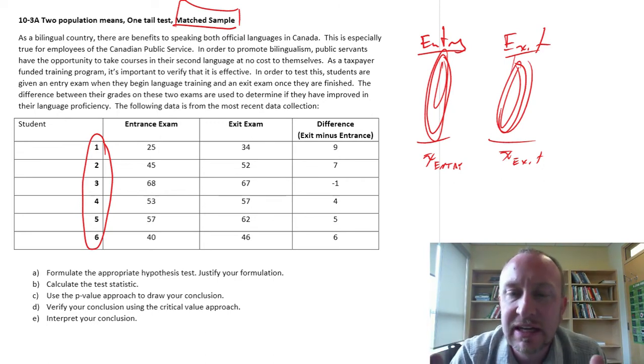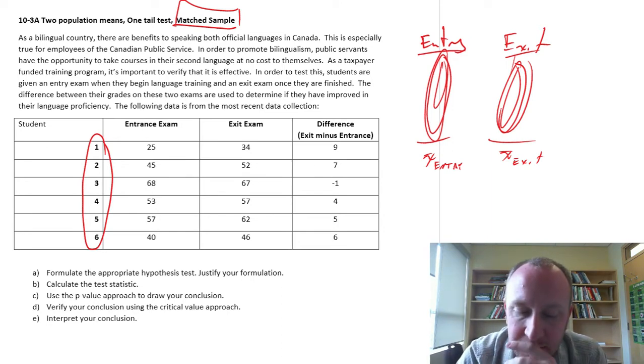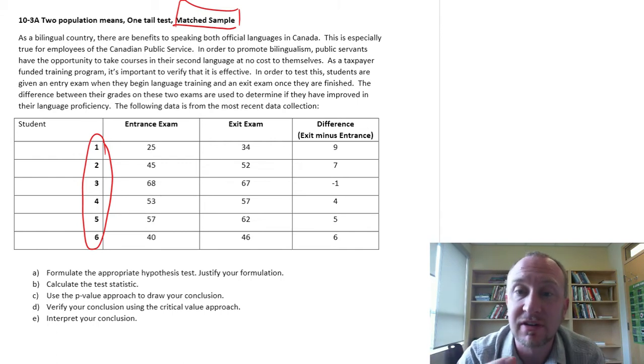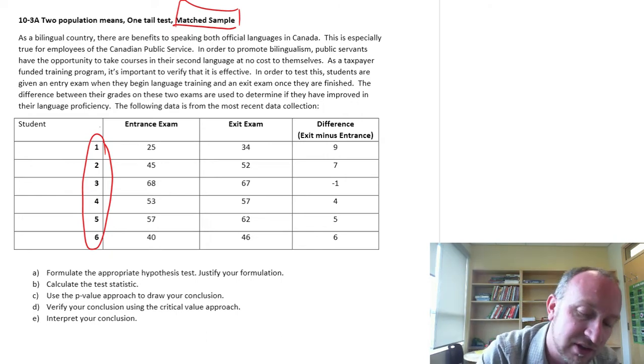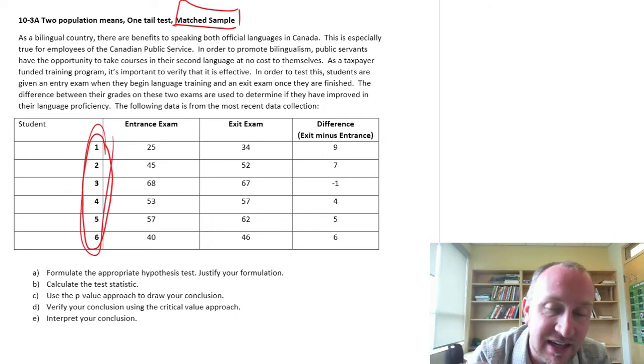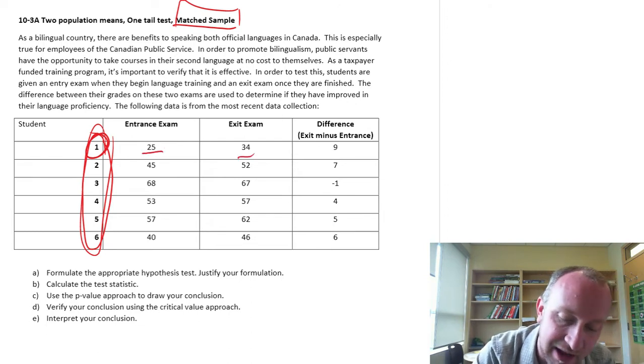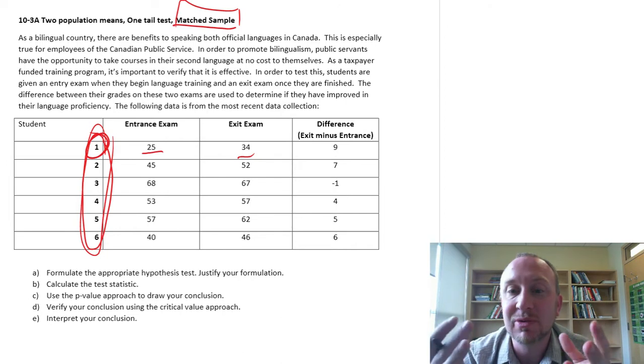There are innate differences in those individual experimental units, those things that we are measuring. So in the matched sample design, we eliminate that source of variation that comes into the data set as a result of differences in our experimental units. And so now I have just six students, and I'm tracking exactly those students. With each experimental unit, I now get two data points. I have that person's entrance grade, that person's exit grade.